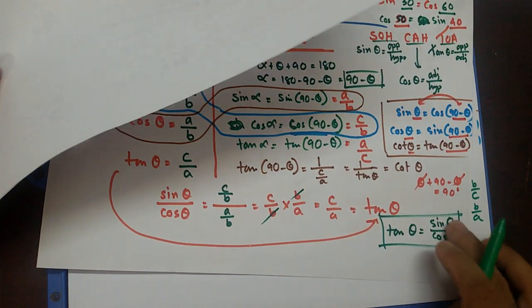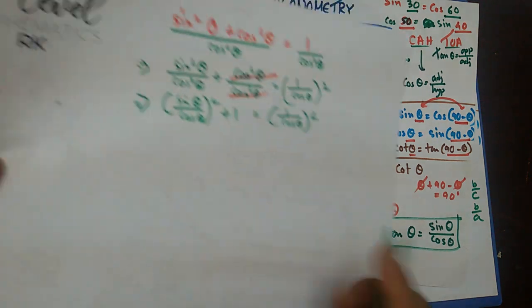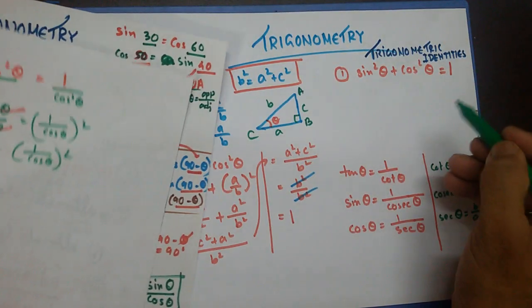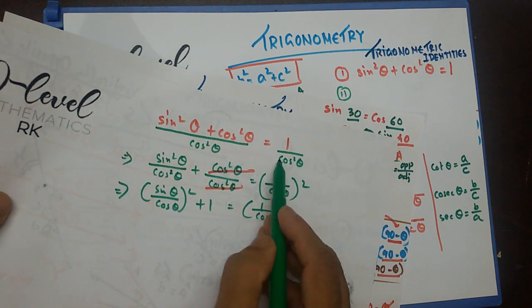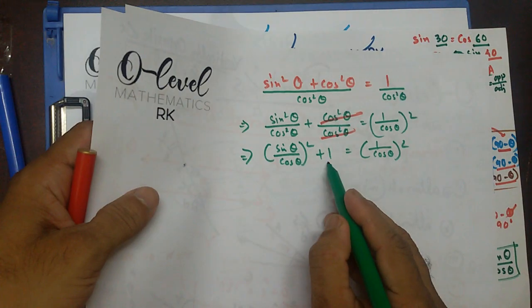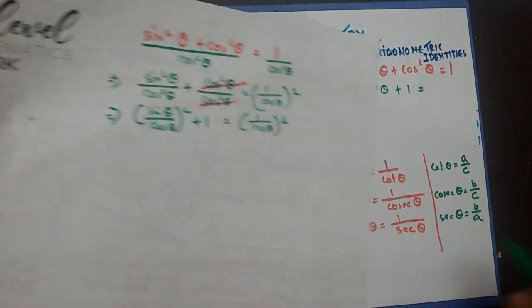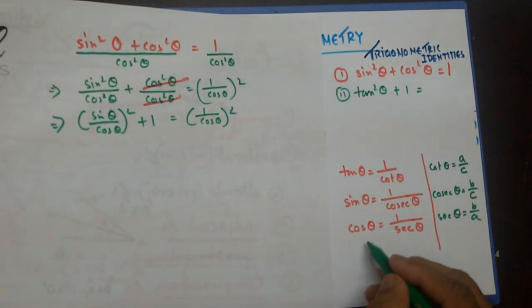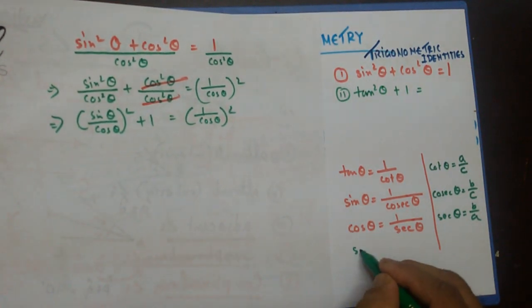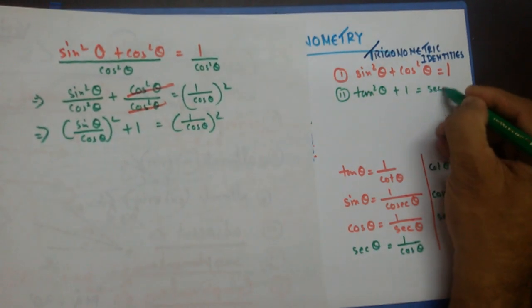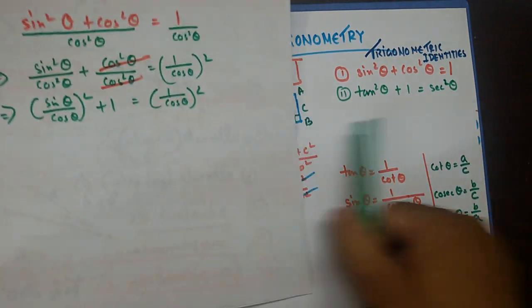Now sin theta by cos theta — I hope you remember — was tan theta. So when I have (sin theta by cos theta) squared, it is going to be tan squared theta. So I have divided both sides like that, and I get another formula: tan squared theta plus 1 equals 1 by cos squared theta. Now 1 by cos theta is sec theta, so sec theta equals 1 by cos theta, which means 1 by cos squared theta is sec squared theta. That gives another trigonometric identity: tan squared theta plus 1 equals sec squared theta.